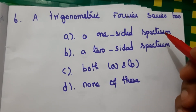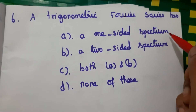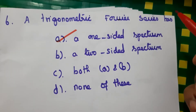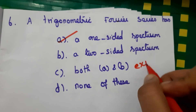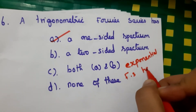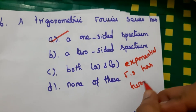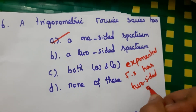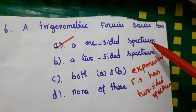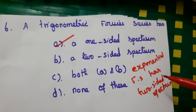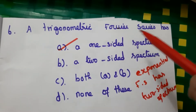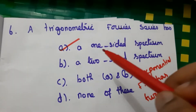Sixth question: the trigonometric Fourier series has a one-sided spectrum, while the exponential Fourier series has a two-sided spectrum. Since the question asks about the trigonometric Fourier series, the answer is A — one-sided spectrum.